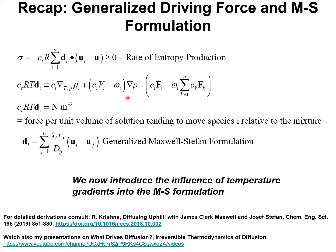Pressure gradients are effective in separations only if there is a difference between the volume fraction and the mass fraction, as is the case in the separation of uranium isotopes with ultracentrifugation. Then we have the influence of body forces, which could be electrostatic potential gradients. A simple physical explanation of the term CT·R·T·Di, which has units of newtons per cubic meter, is that it is a force acting per unit volume of solution tending to move species i relative to the mixture.